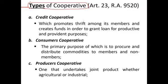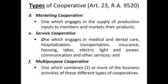Some schools combine credit and consumer cooperative, and they become what we call a multi-purpose cooperative — combining two or more types. In a consumer cooperative, transactions are normally with both members and non-members. A producers cooperative is one that undertakes joint production whether agricultural or industrial. A marketing cooperative engages in the supply of production inputs to members and markets their products. A service cooperative engages in medical and dental care, hospitalization, transportation, insurance, housing, labor, electric power, communication, and other services — it is broad.